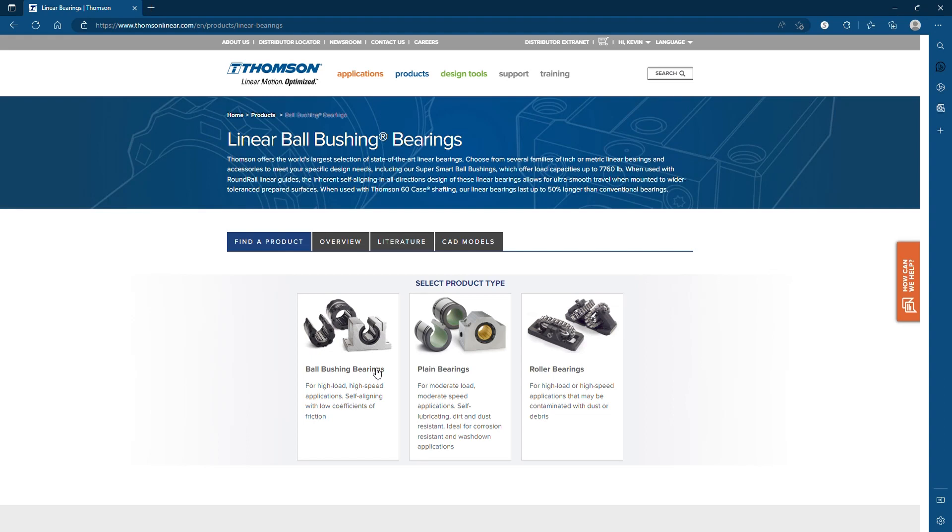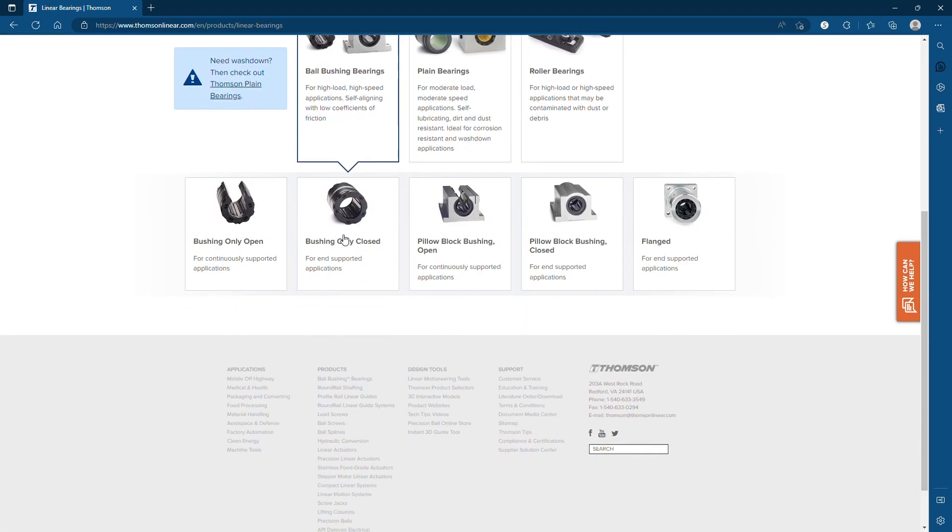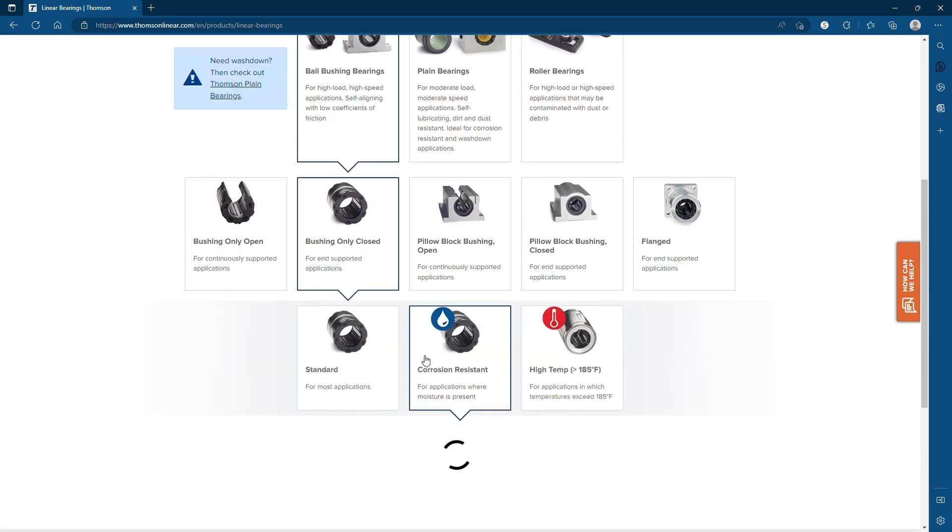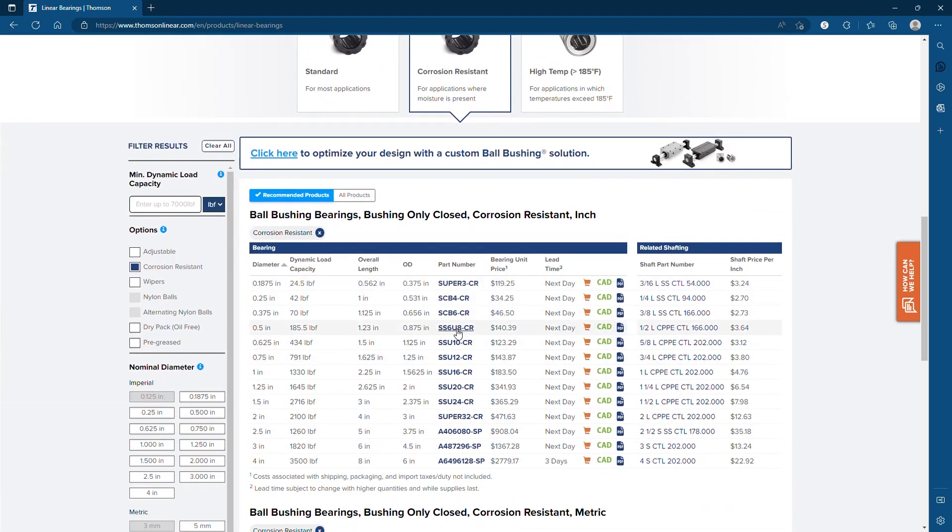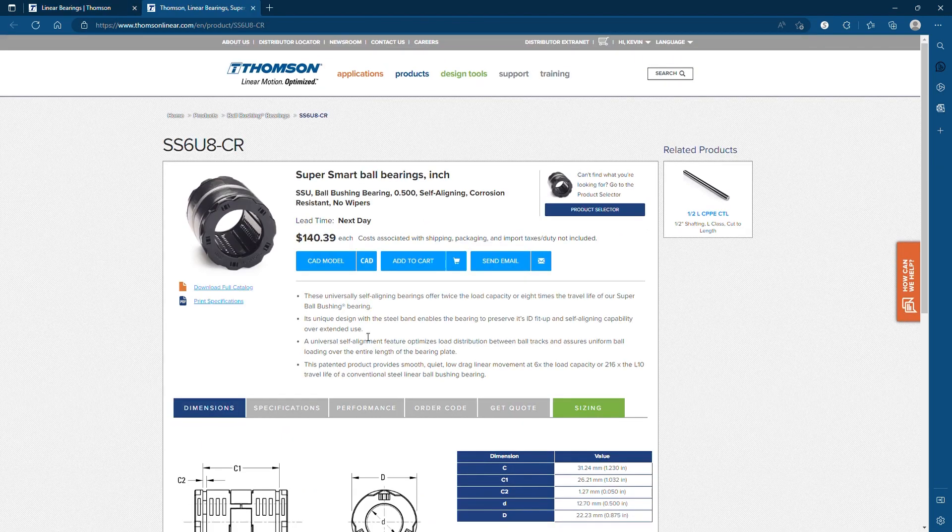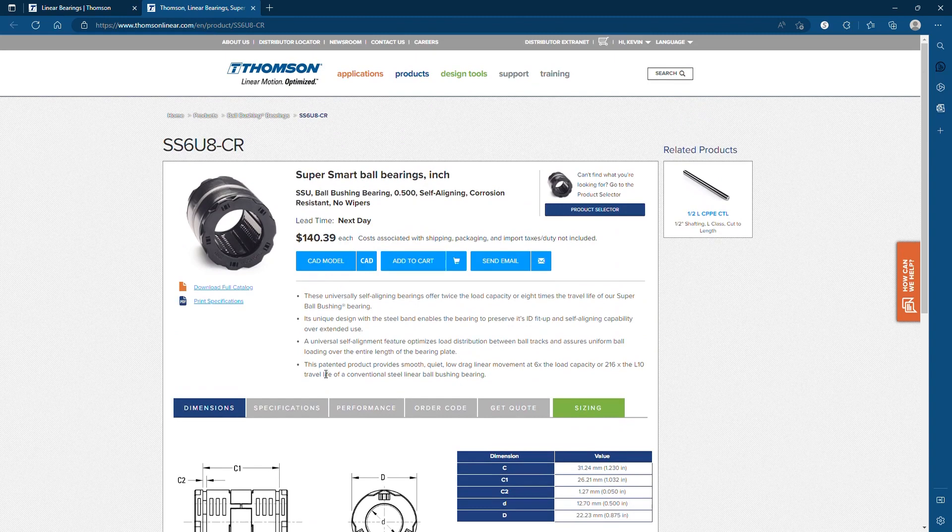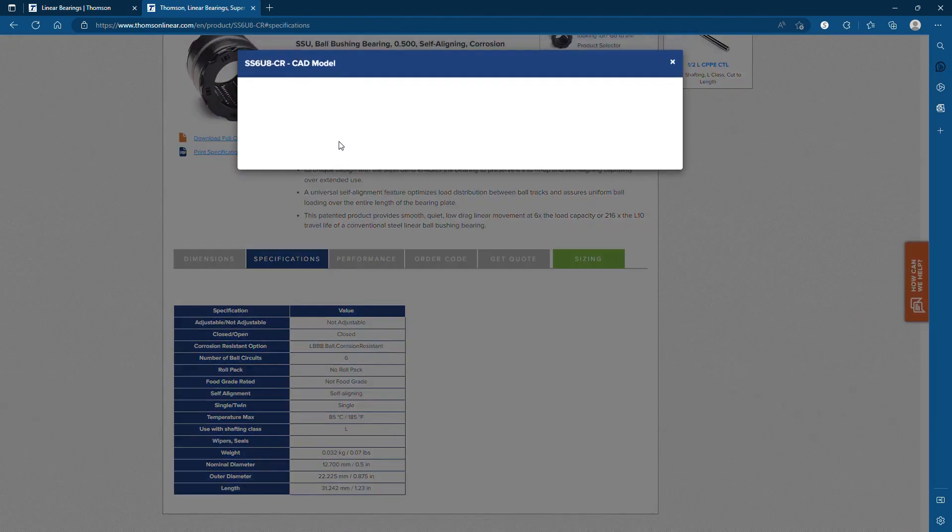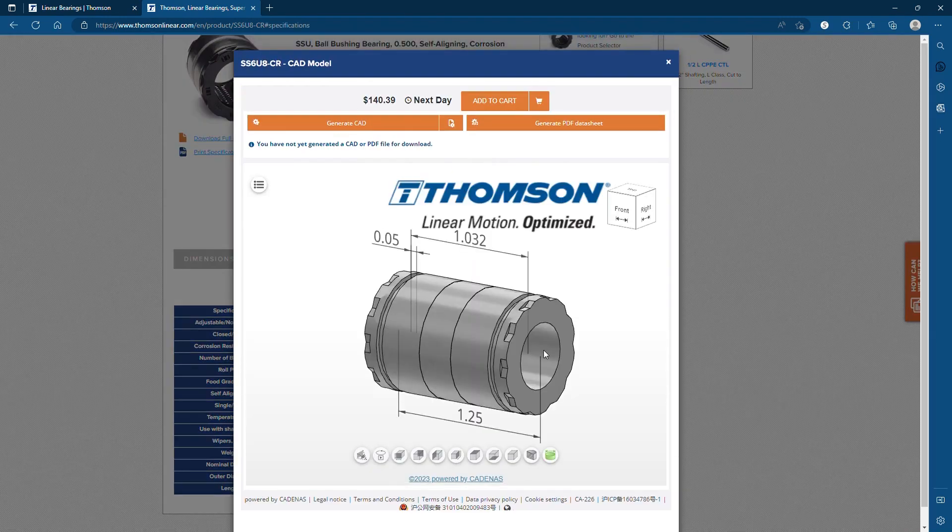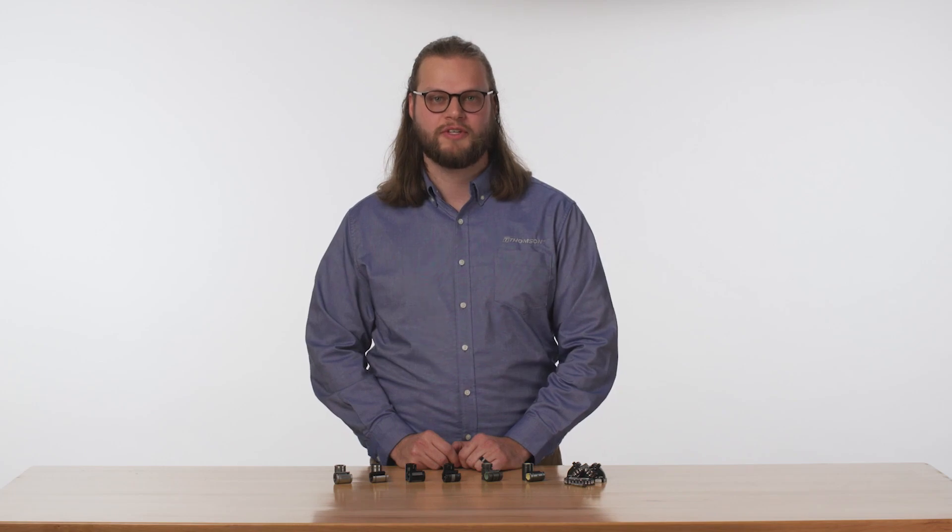To make your linear bearing selection process even easier, Thomson offers an online selector tool. Using a visual, application-based interface, you can narrow your search and find your ideal bearing in only a few minutes. You also have immediate access to CAD-ready 3D models, catalog links, product details, as well as upfront lead times and pricing. To learn more about Thomson Linear bearings, visit ThompsonLinear.com or contact our experienced customer support team.